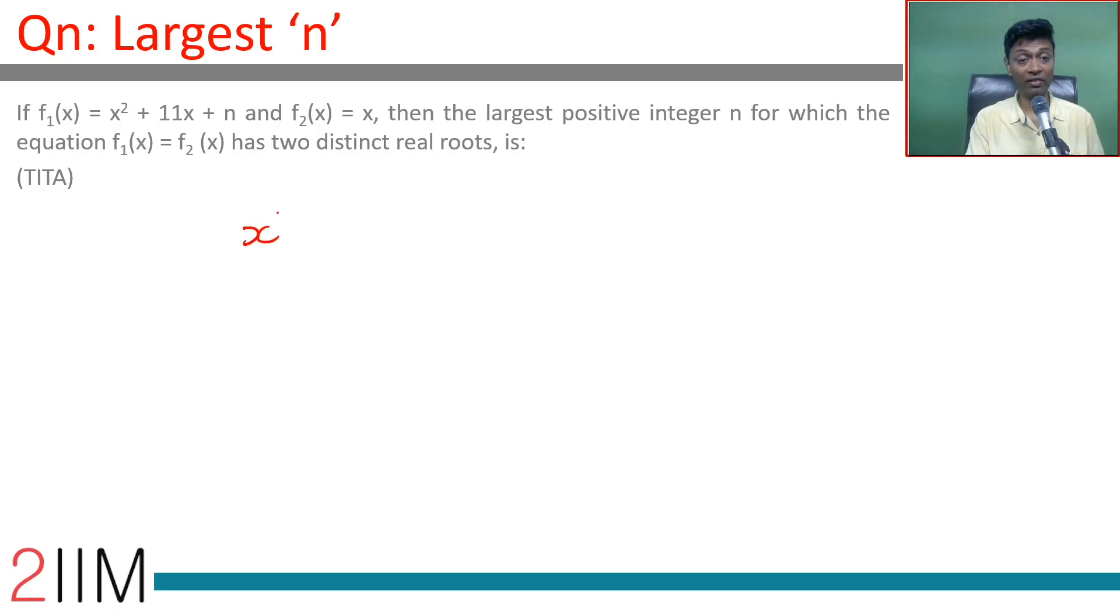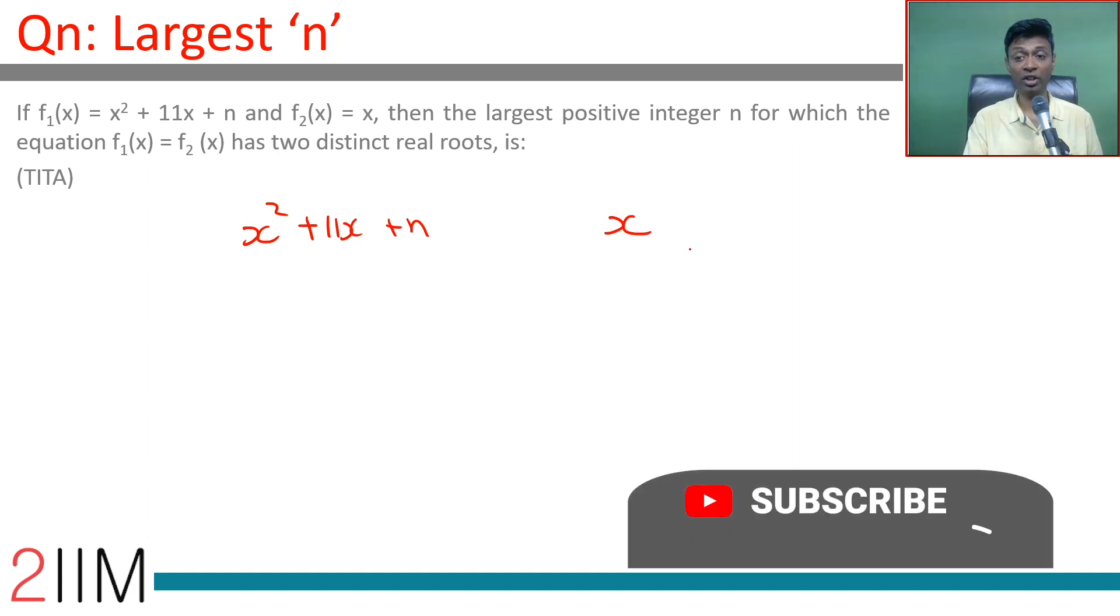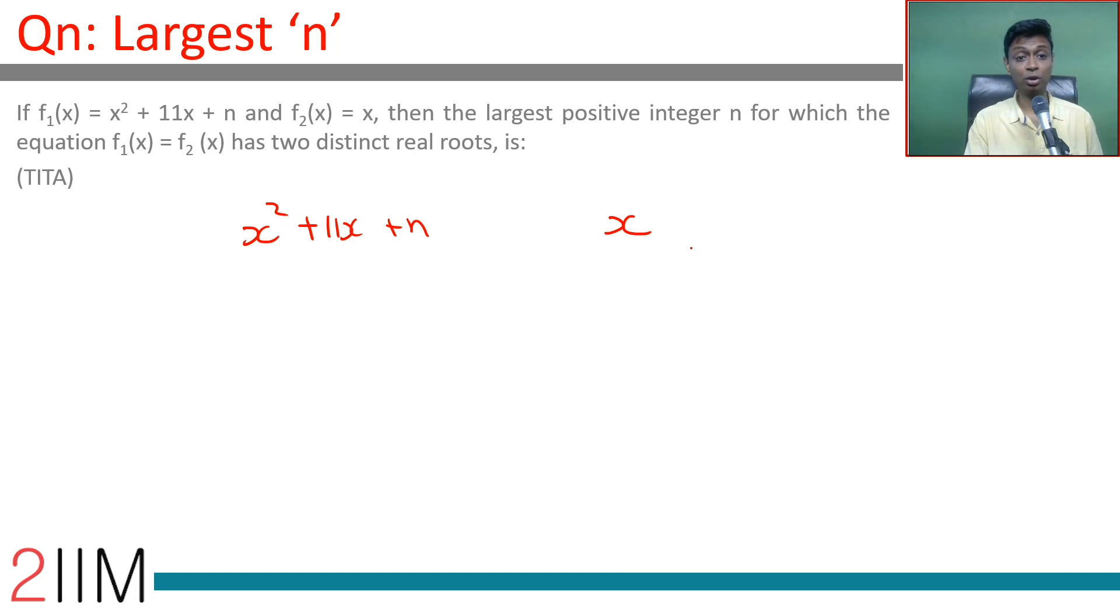f1 of x is x square plus 11x plus n, f2 of x is x. Then the largest positive integer n for which the equation f1 of x equal to f2 of x has two distinct real roots. These two